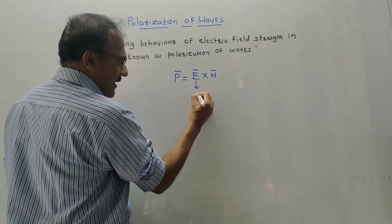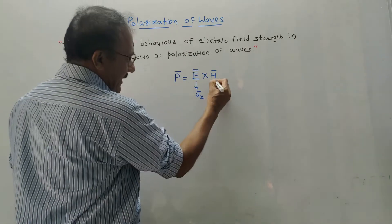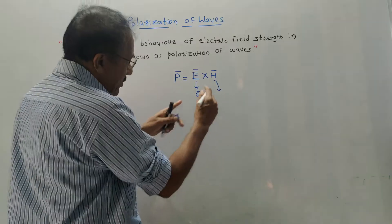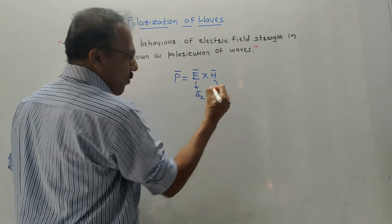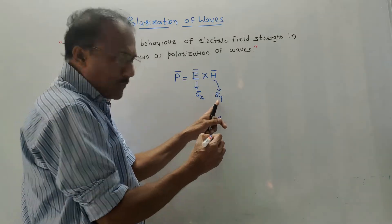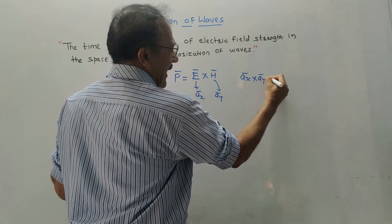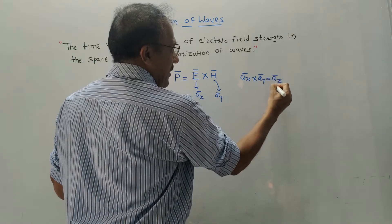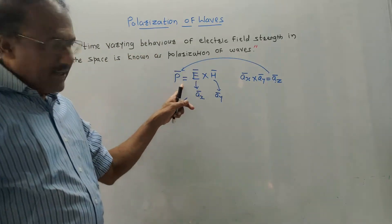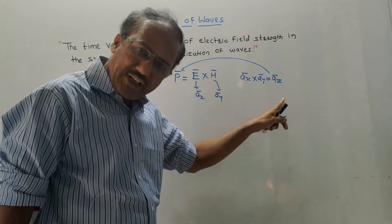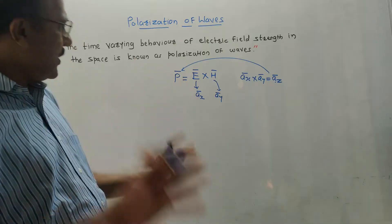One basic thing: all three quantities — E bar, H bar, and P bar — are always perpendicular to each other. For example, if E bar is along the X direction (unit vector A_X bar), then H bar will be perpendicular to E bar, say along Y direction. Taking the cross product A_X bar cross A_Y bar gives A_Z bar, indicating the direction of power flow is along Z direction.